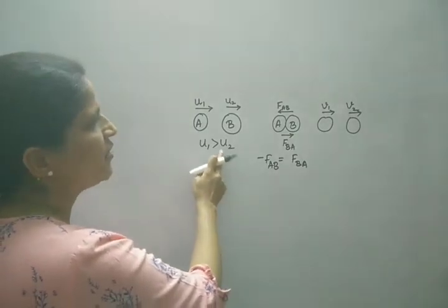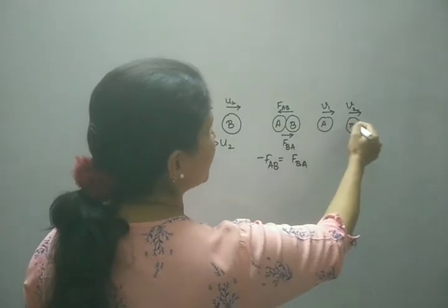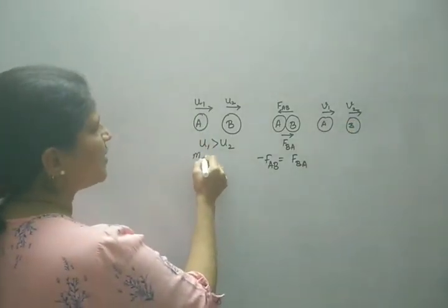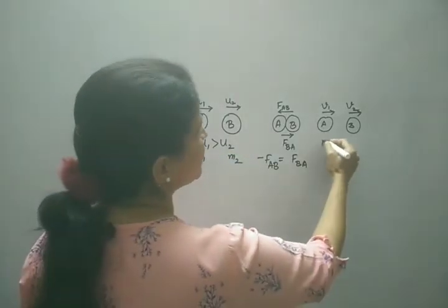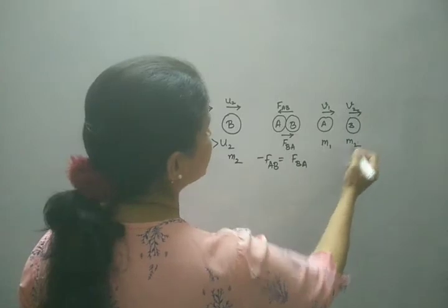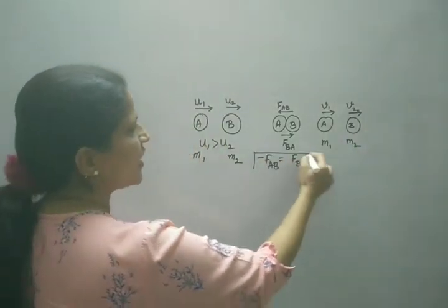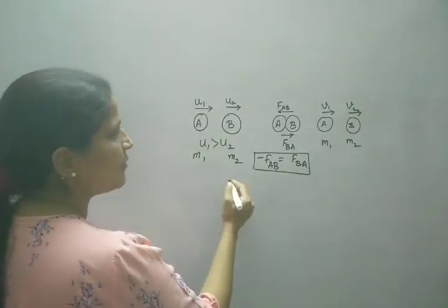These are the initial velocities of ball A and B, these are the final velocities. Even after interaction their masses will not change. Suppose M1 is the mass of ball A, M2 is the mass of ball B. When they interact and put force on each other, it means there will be change in momentum.